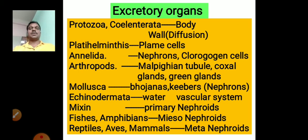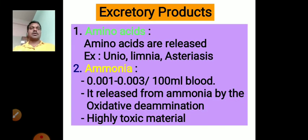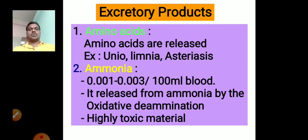We covered what excretory organs are present from protozoans to mammals, and the excretory products were also discussed. The main excretory products discussed were the nitrogen-based molecules.